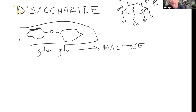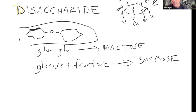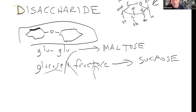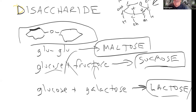Two glucoses bonded together is called maltose. A glucose plus a fructose gives us sucrose — important because it's one of the main transport sugars in plants, which is where we get a lot of our carbohydrates in our diet. Once in our body, we can break them apart, get glucose, and transform fructose into glucose for cellular respiration. Another disaccharide is glucose plus galactose, which becomes lactose or milk sugar.